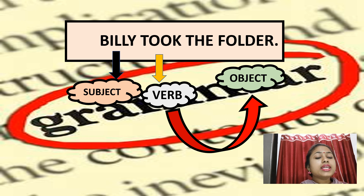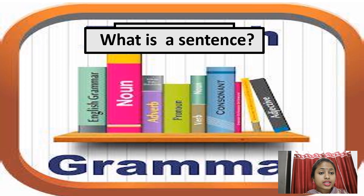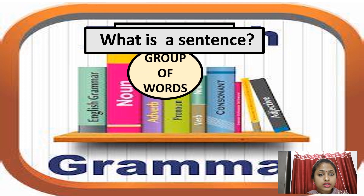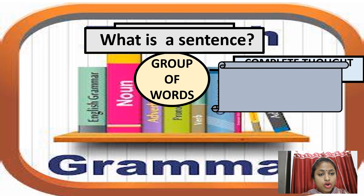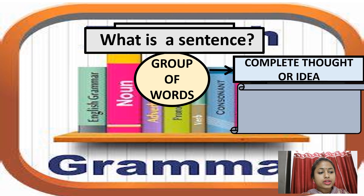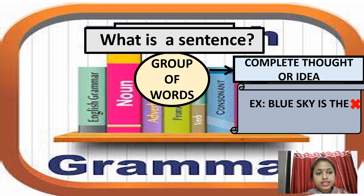Let's move to the next slide to have a complete definition of a sentence. What is a sentence? A group of words — kind of — but a group of words which gives you a complete thought or idea. Let's have an example. Consider: 'blue sky is the.' Is it making any sense? It is a group of words, but it is not making any sense.